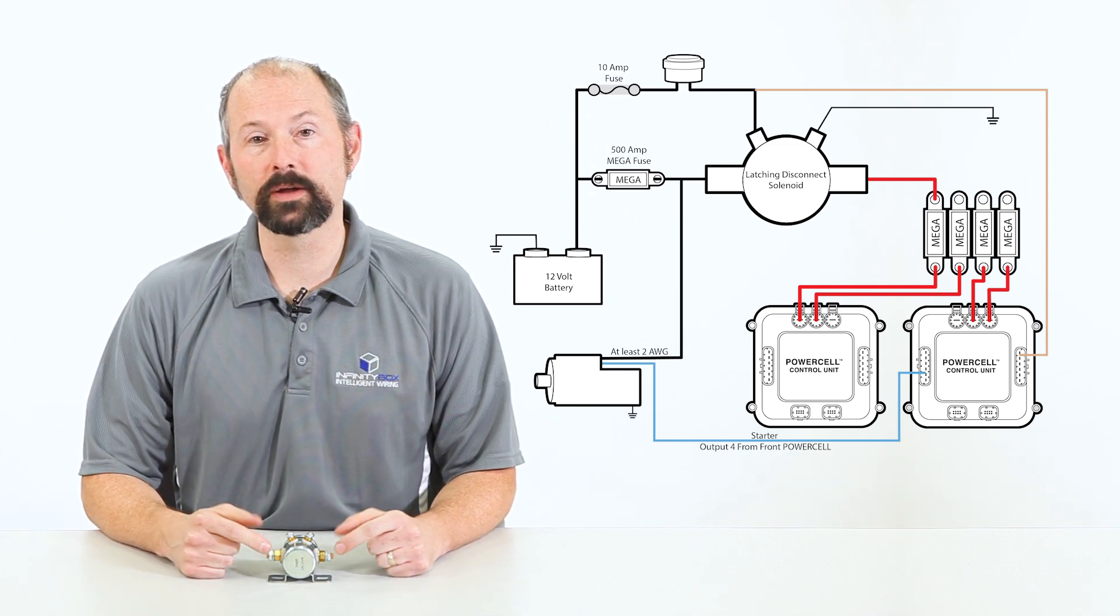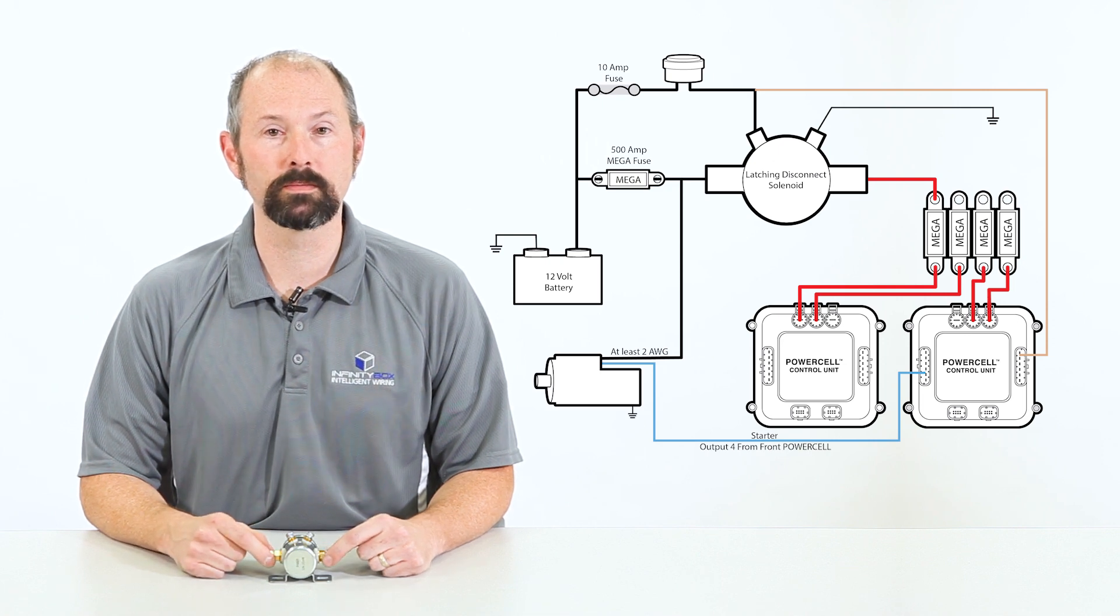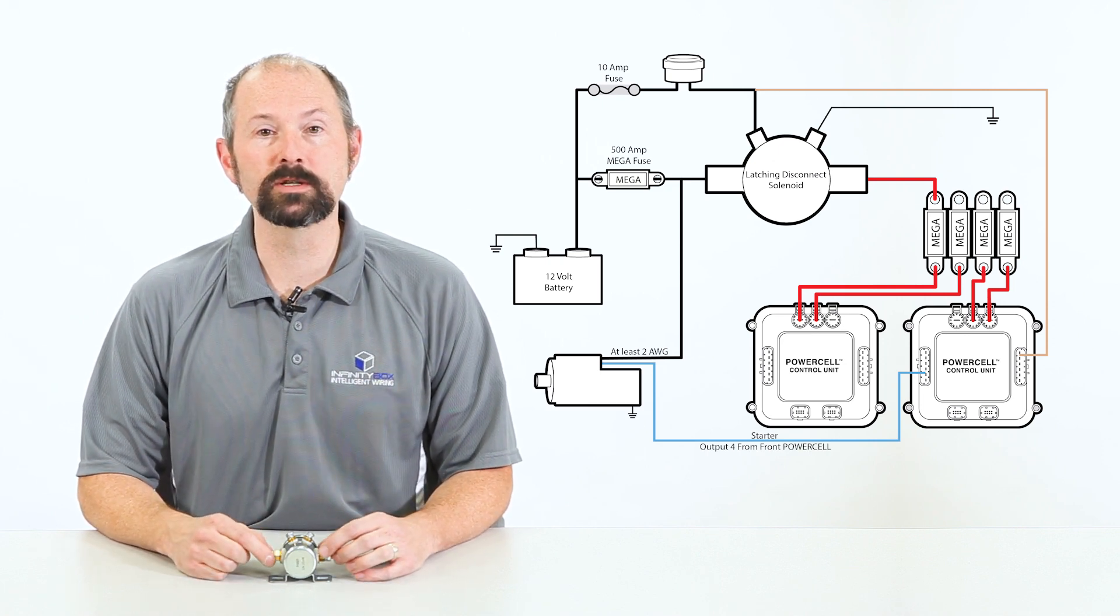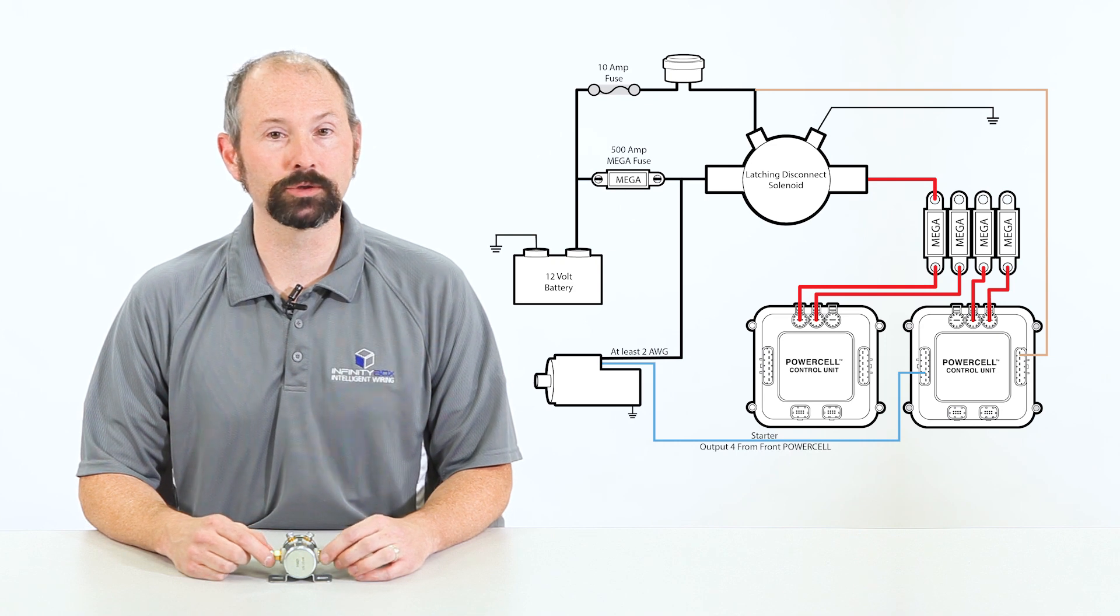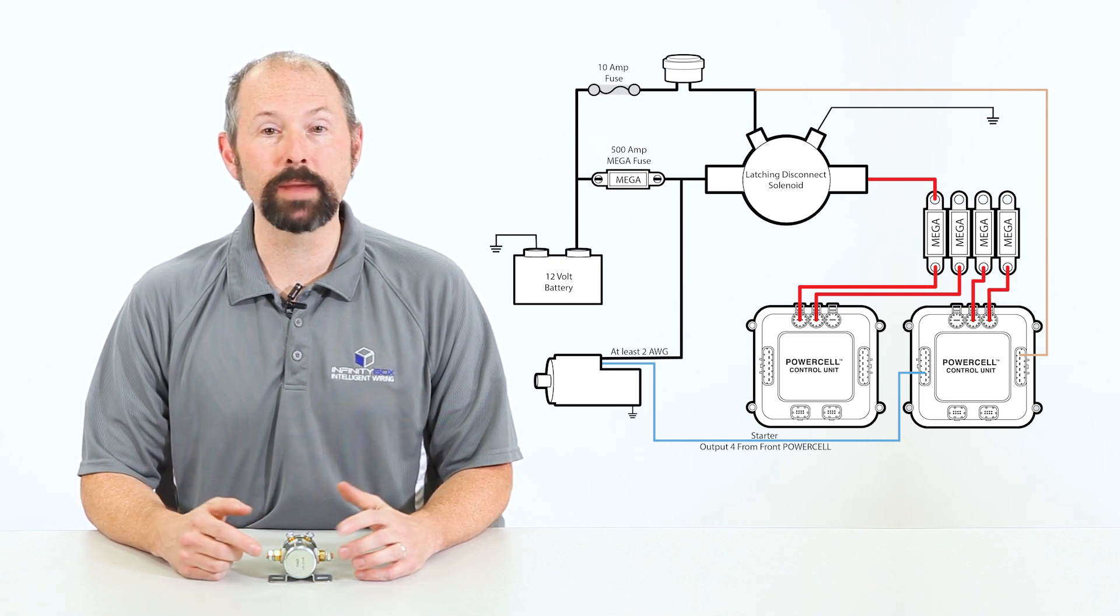This special solenoid also connects to an output on one of your power cells. The Infinity Box system is always watching the battery voltage. When it starts to see the battery voltage drop, it makes some decisions.